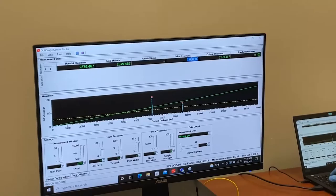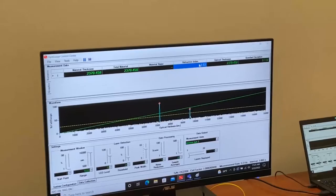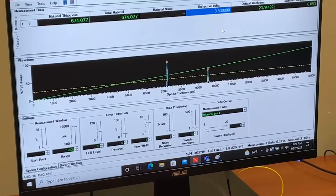So in this case for silicon telecom wavelengths are about 3.53 for the refractive index. And then you can see that now the software then goes and calculates what your total material thickness is.